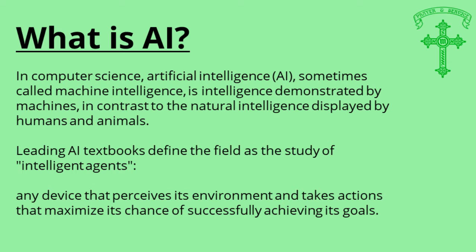What is AI? This is off Wikipedia, and I thought it was quite a good definition. In computer science, artificial intelligence, or AI — sometimes called machine intelligence — is the intelligence demonstrated by machines, in contrast to the natural intelligence displayed by humans and animals. Leading AI textbooks define the field as the study of intelligent agents — any device that perceives its environment and takes actions that maximize its chances of successfully achieving its goals.